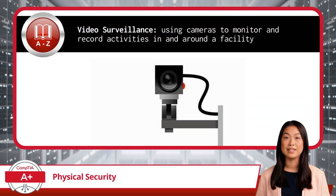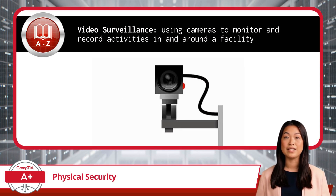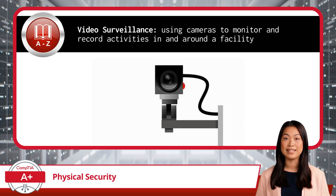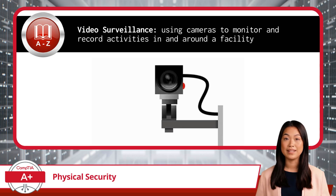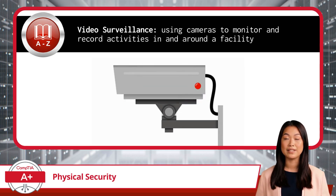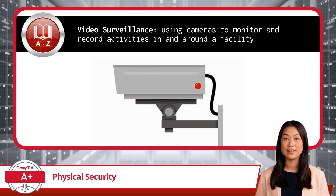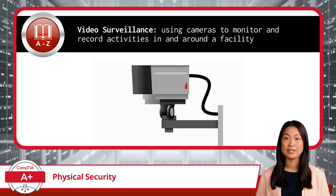Video surveillance is another essential tool in physical security. It involves using cameras to monitor and record activities in and around a facility, providing real-time observation and recorded evidence of incidents. Strategically placed cameras can deter unauthorized access and provide crucial evidence in the event of a security breach, making them a key component of any physical security strategy.